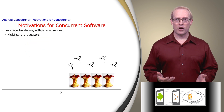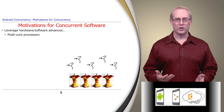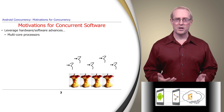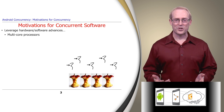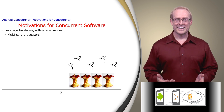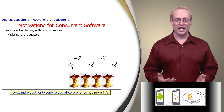These days, a prime reason for using concurrency is to leverage advances in hardware and software. Multi-core processors are becoming ubiquitous, to the point where it's getting hard to buy a computing device that just has one core. This link describes a wide range of quad-core Android phones.